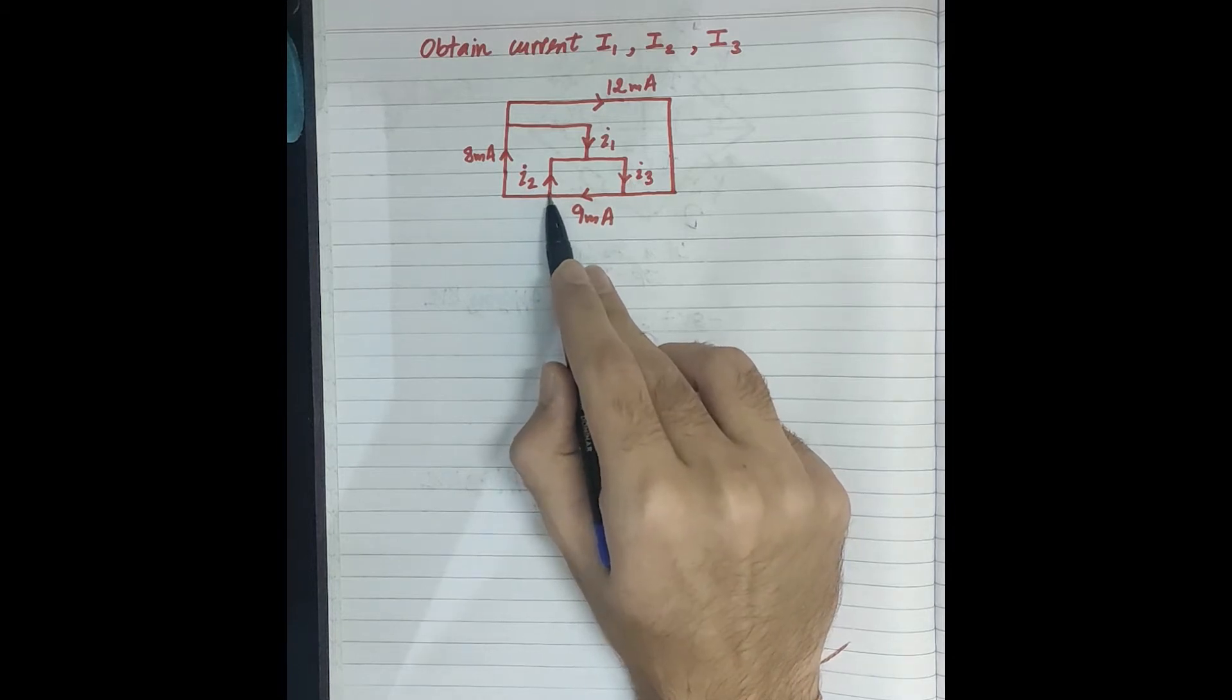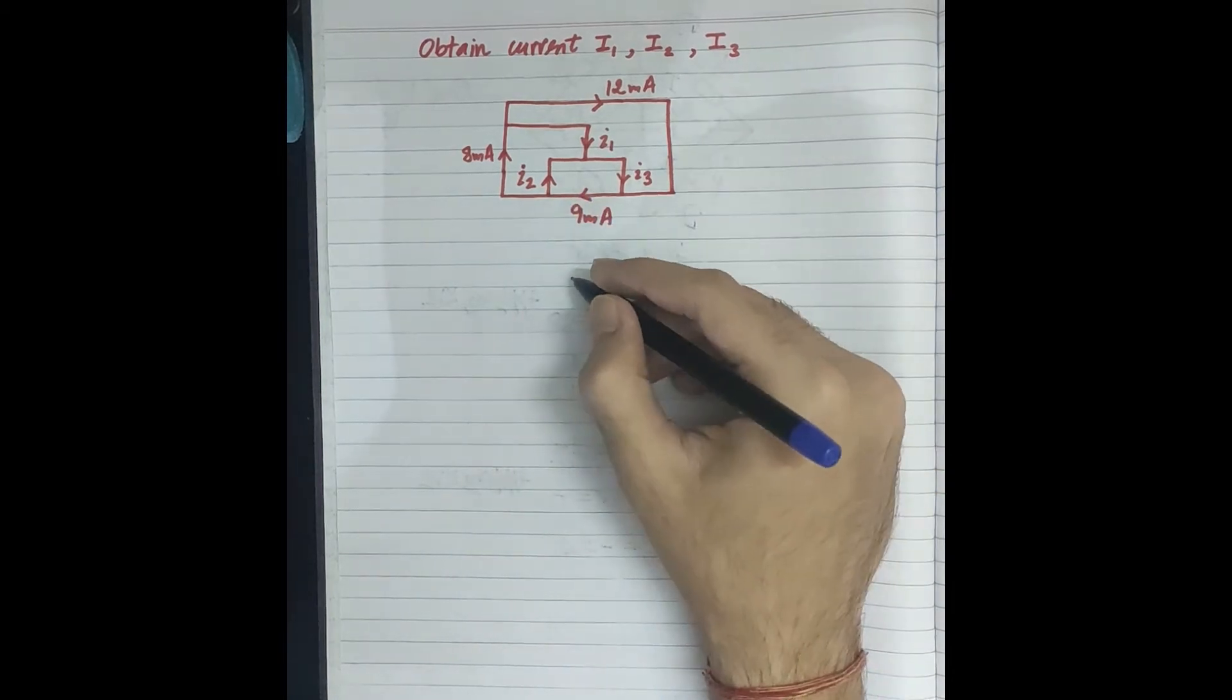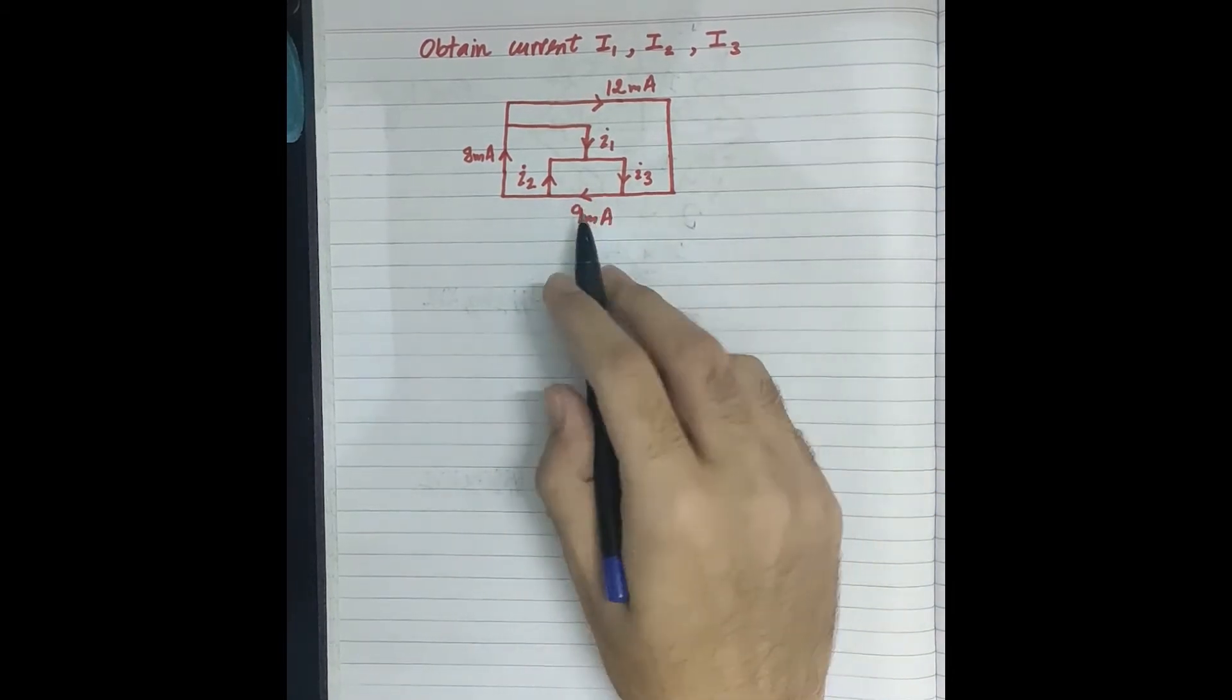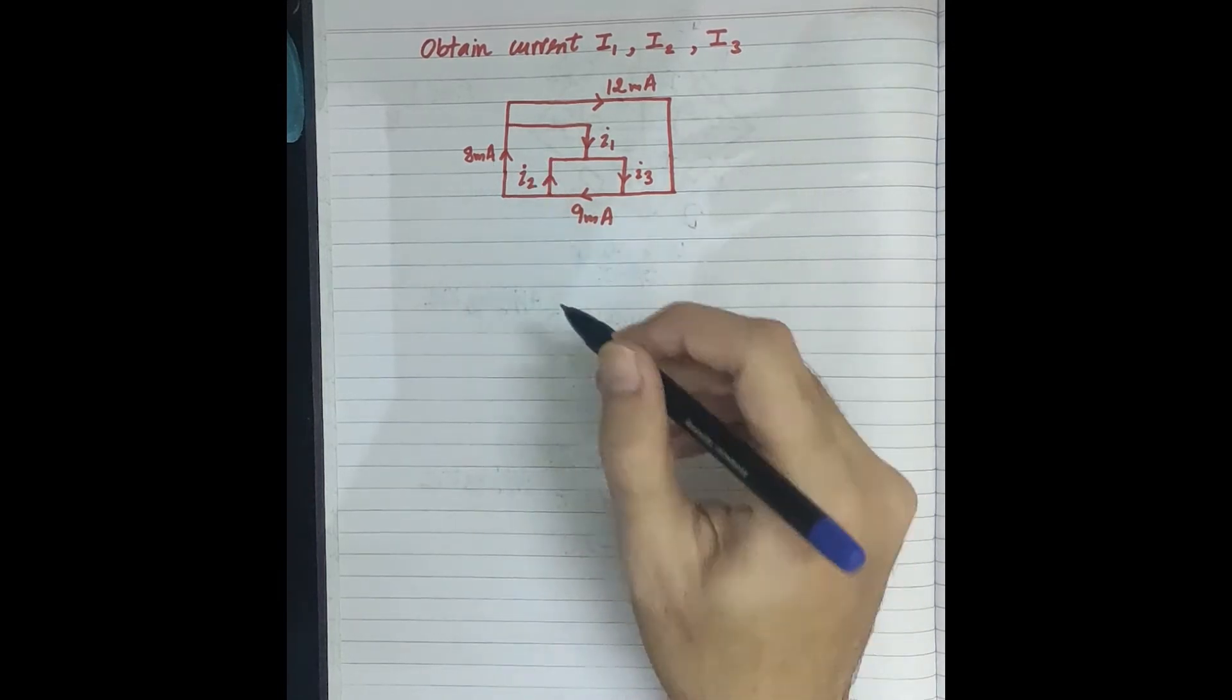If I apply KCL, incoming current equals outgoing current. The incoming current is 9 mA, and the outgoing current is 8 mA plus I2. So incoming current, 9 mA, equals outgoing current.